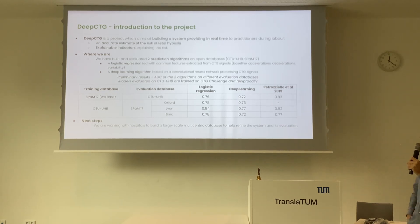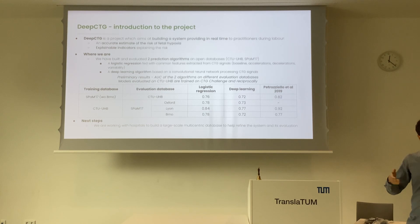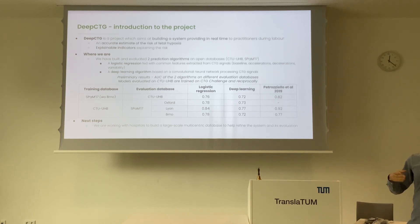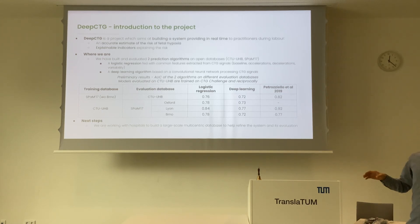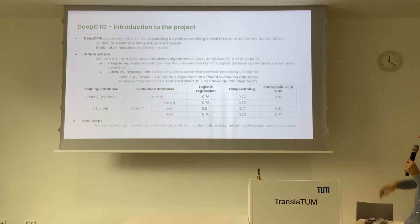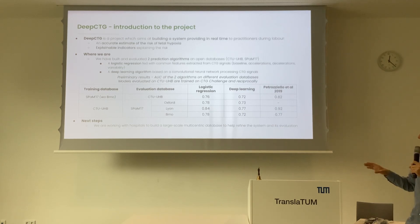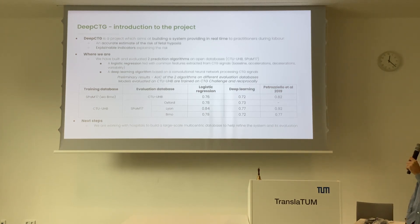This explainability is really needed to make sure that the data and numbers we produce will be appropriated by the practitioners who use it. We have built and evaluated two prediction algorithms on open databases. The first is the CTU-UHB database, with a bit more than 500 cases, of which about 40 are cases of severe hypoxia with a pH at birth below 7.05. The second is the SPAM17 database with 300 cases — 100 from Bruneau, 100 from Oxford, and 100 from Lyon — of which 60 are cases of severe fetal hypoxia.